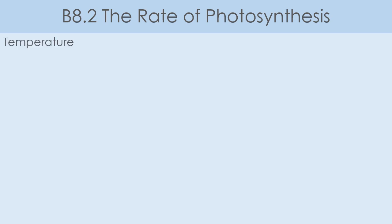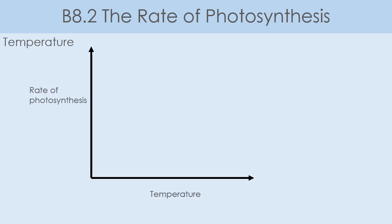Next we're going to look at temperature. Again, we're going to draw a graph with rate of photosynthesis on the Y axis and temperature on the X axis. This one is slightly different — we don't start at the origin. When the temperature is zero, plants are still able to photosynthesize, just much slower. As the temperature increases, so will the rate of photosynthesis, until we get to about 40 to 50 degrees, when suddenly the rate of photosynthesis drops off very, very quickly. So we get an increase as temperature rises until about 40 to 50 degrees, then a very sharp decrease.